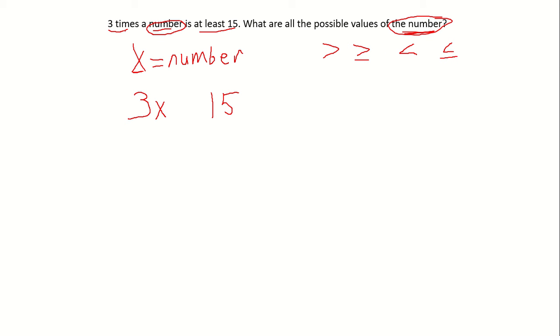In this problem, we're looking at 3 times a number is at least 15. If we know that it's going to be at least 15, it has to be greater than 15, so we can immediately eliminate these two options.